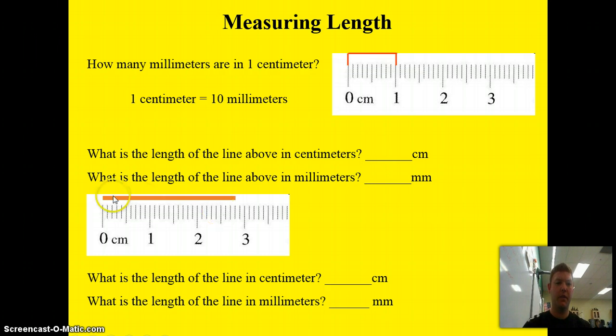As we look down at this ruler with this line right here that I'm underlining, what is the length of the line in centimeters? Well, this one happens to be 2.1, 2.2, 2.3, 2.4, 2.5, 2.6, 2.7, 2.8 centimeters. What would that be in millimeters? 28 millimeters. That's how you use centimeters and millimeters.